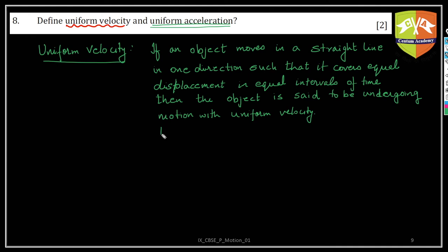So for example, though it is very difficult to find out an ideal example for uniform velocity, it hardly happens in our day to day life, but ideal case could be, for example, a block moving on a frictionless horizontal table. Frictionless is important because no force should be acting. In one direction.